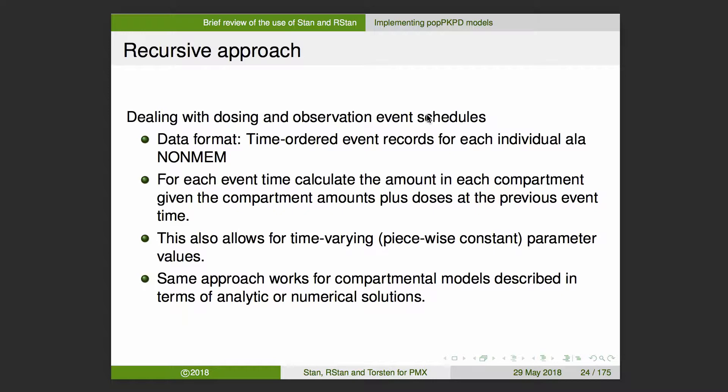We're going to deal with dosing and observation schedules. Let's assume our data format is a bunch of time-oriented event records for each individual, much like NONMEM. For each event time, I'm going to calculate the amount in each compartment given the compartment amounts plus doses at the previous event time. I'm going to do the calculations recursively — at each time point, resolving the initial value problem where the initial values are whatever the values were at the previous event, plus any doses added.